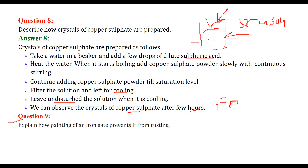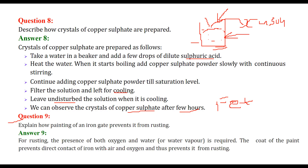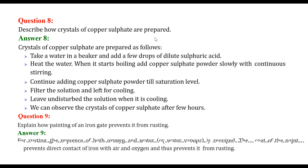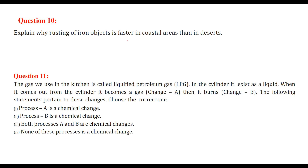Explain how painting of an iron gate prevents it from rusting. Iron combines with oxygen and water vapor to form rust - that is iron hydroxide products. For rusting, the presence of oxygen and water vapor is required. When you coat the iron with paint, there is no direct contact between iron and oxygen or air, so rusting is prevented.